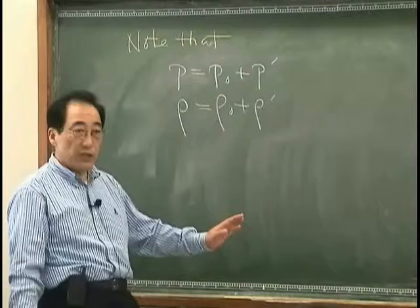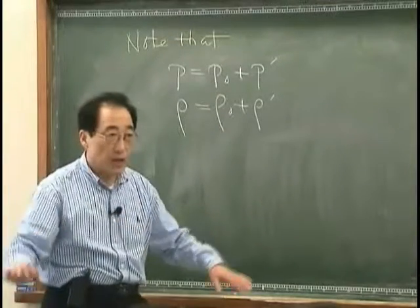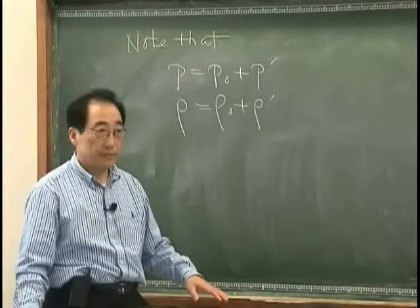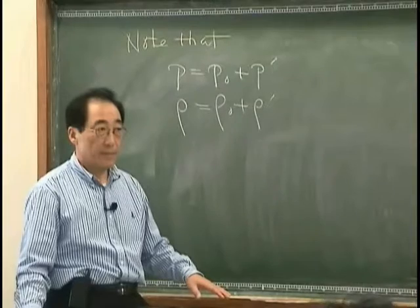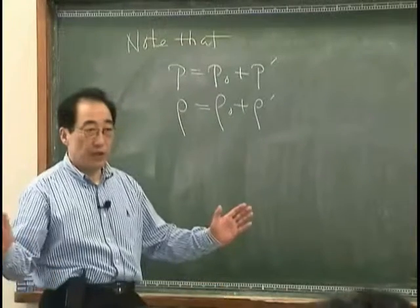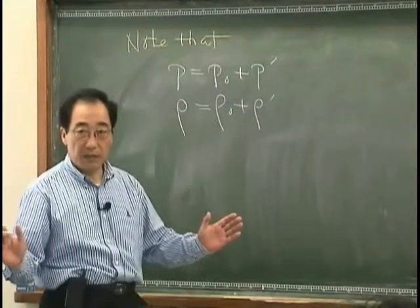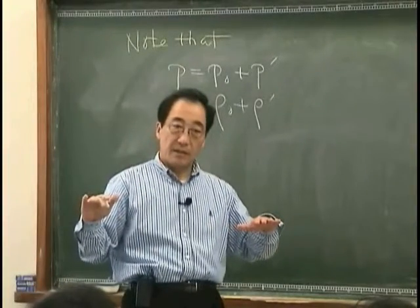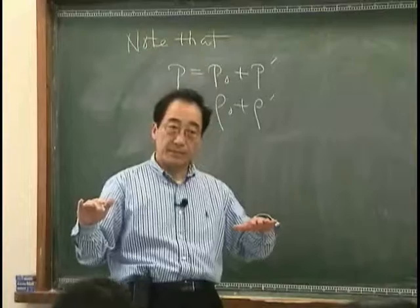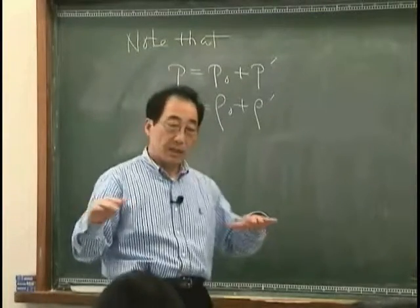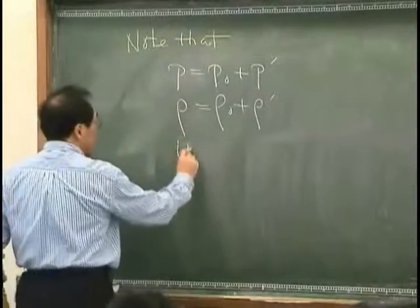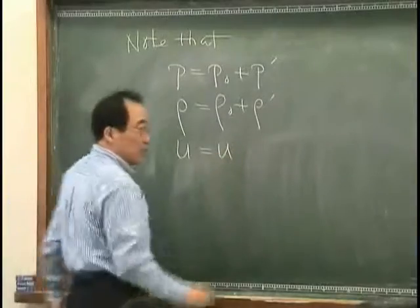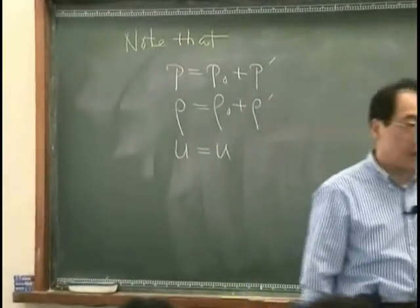rho zero is the density when there is no sound. Because fluid is not compressed or expanded, the density is just the density of the air. And U is the velocity that is induced by excess pressure.